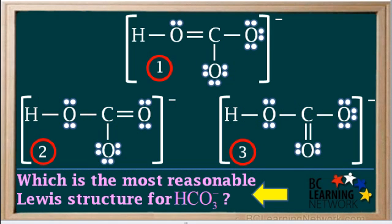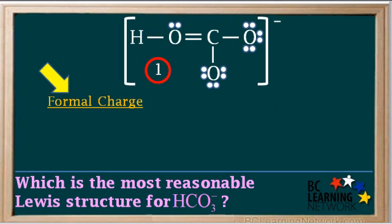At this point we need to determine which structure is the most likely Lewis structure for the bicarbonate ion HCO3-. For this we use formal charge.